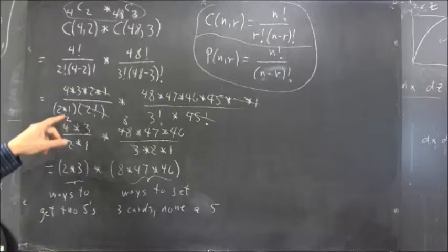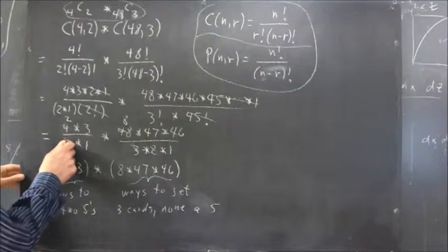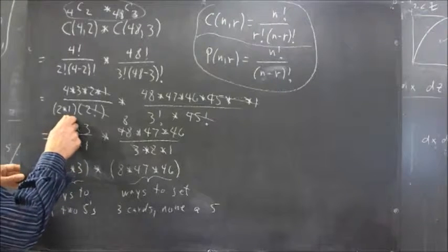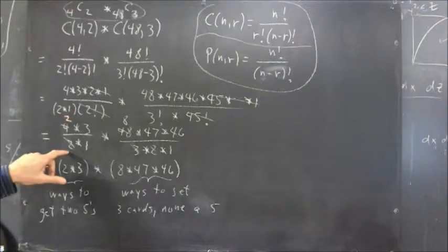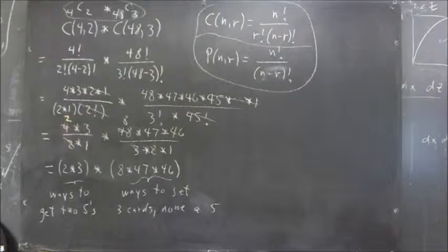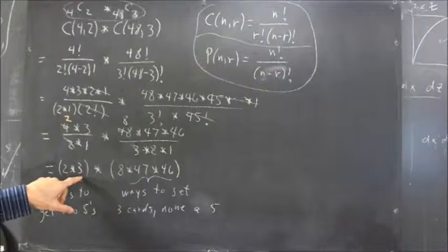We have 4 times 3 divided by 2 times 1. Well, we divide the 2 into the 4 and that leaves us 2. Let me be real clear about that. The 2 divides the 4, leaving us 2. So, we have 2 times 3 here so that this calculation ends up 2 times 3.